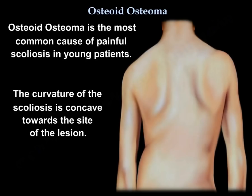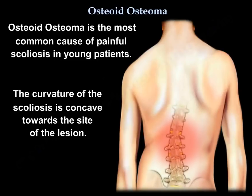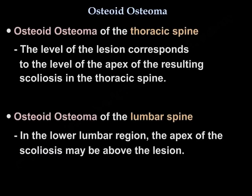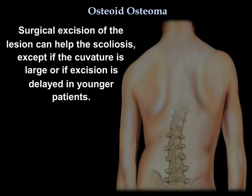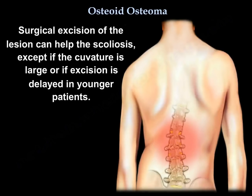Osteoid Osteoma is the most common cause of painful scoliosis in young patients. The curvature of the scoliosis is concave toward the side of the lesion. In the thoracic spine, the level of the lesion corresponds to the apex of the resultant scoliosis. In the lower lumbar spine, the apex of the scoliosis may be above the lesion. Surgical excision of the lesion can help the scoliosis, except if the curve is large or if excision is delayed in younger patients.